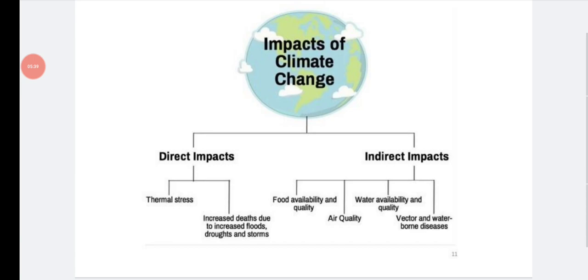First one is direct impacts. First one is thermal stress - there can be heat stress because of increased global warming. In the recent years, you have seen the last September, September was the very hot month throughout this century. There was 0.009 degree Celsius increase in the heat. So that results in heat stress, that's also called thermal stress. That is a direct impact due to climate change. And second one is increased death due to increased flood, drought and storms. Due to flood, in the recent years, again you have seen in the Kerala flood or cool flood, storm flood, there was huge loss of life.